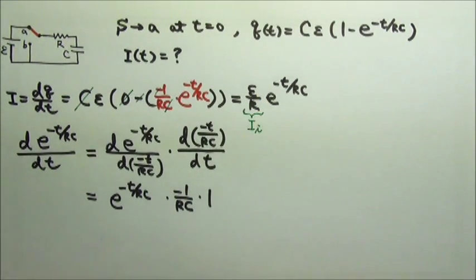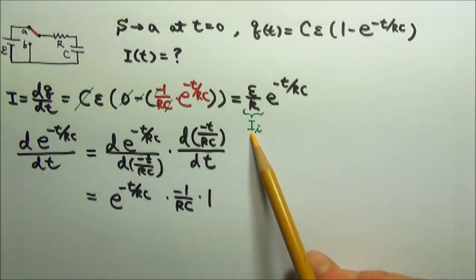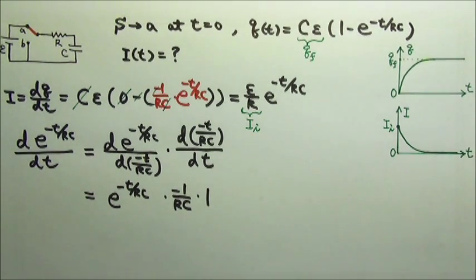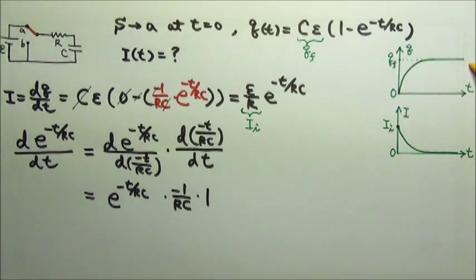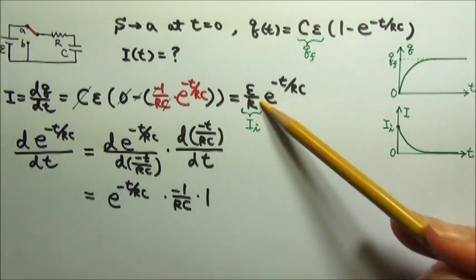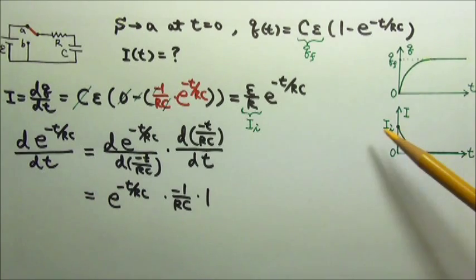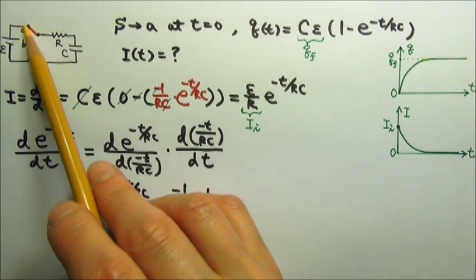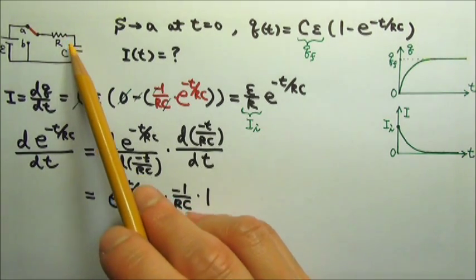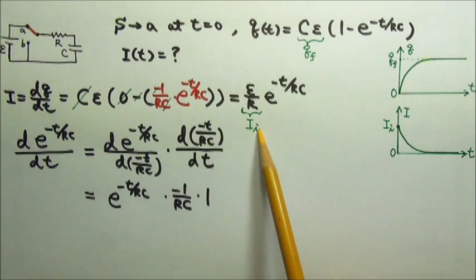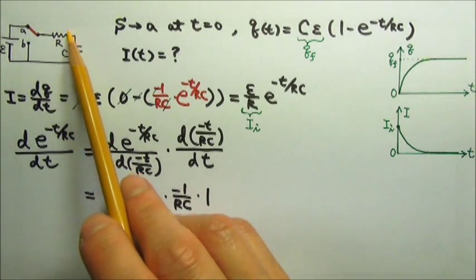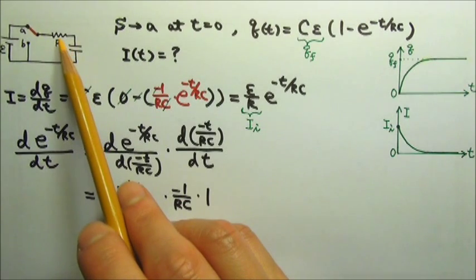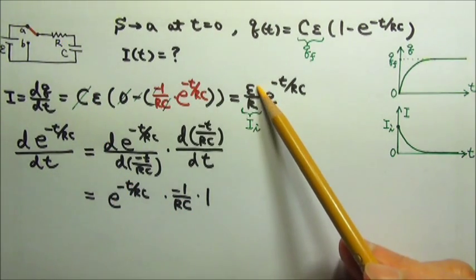This initial value E over R is the initial current. We can plot the charge as a function of time — it is a 1 minus exponential decay graph, and C times E is the final charge on the plates. The current as a function of time graph is an exponential decay with an initial value of E over R. When the switch is at A, R and C are in series, so they share the total voltage E. Initially there is no charge on the capacitor, so the capacitor gets no voltage, and all the voltage E belongs to the resistor, giving a current of V over R.